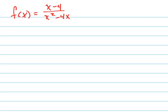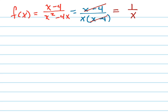Let's graph this rational function using the 10-step process. The first three steps are to find removable discontinuities. The first step is to factor and cancel if possible. Notice that I can rewrite the denominator by factoring out an x, giving x times (x minus 4). When I do that, it becomes a really easy problem because these just cancel out, and I get 1 over x.